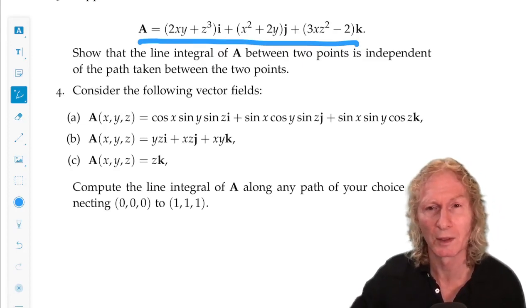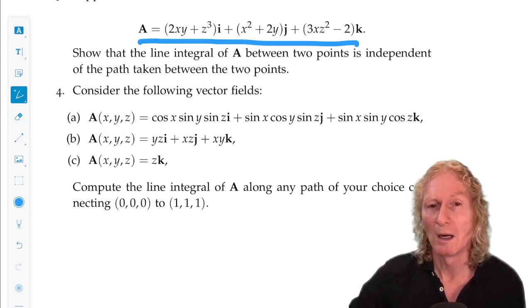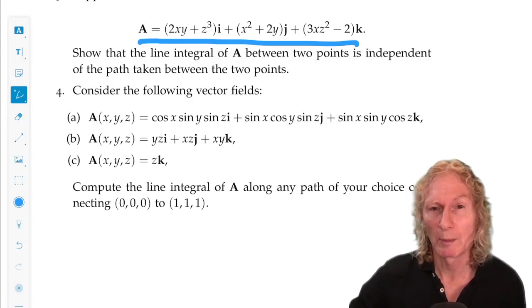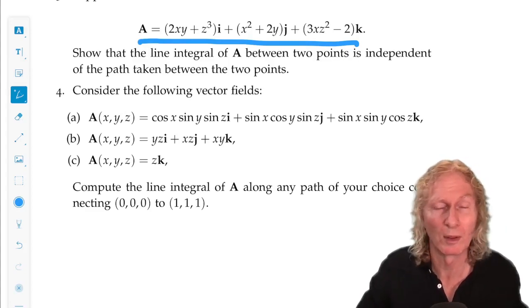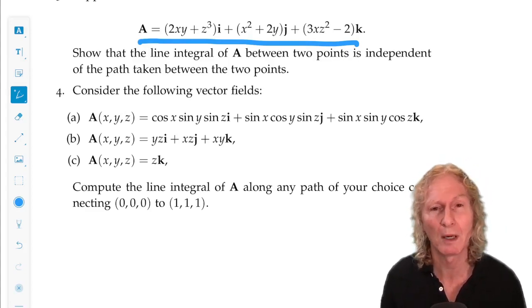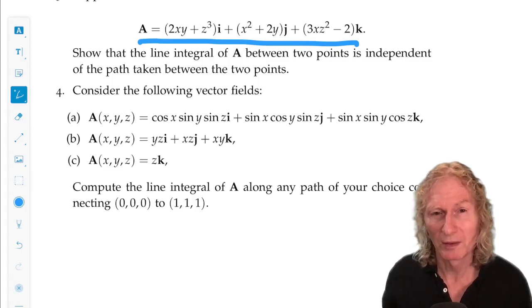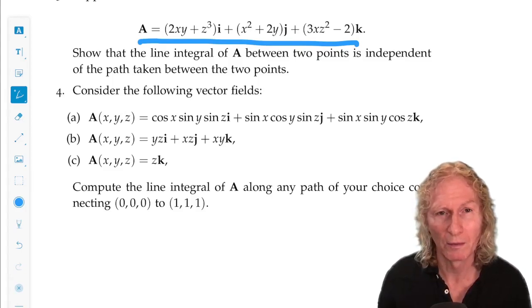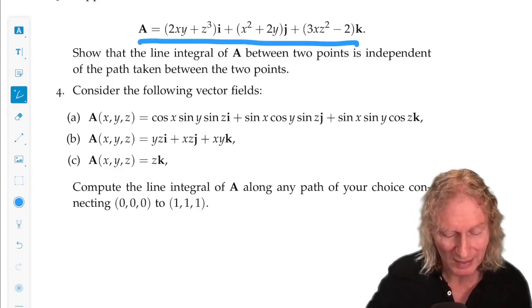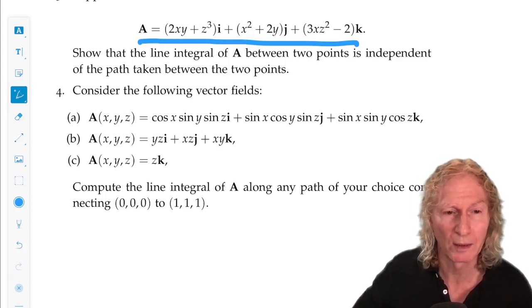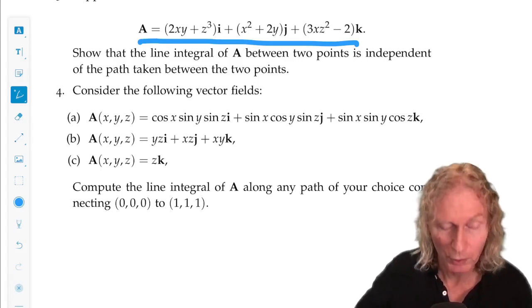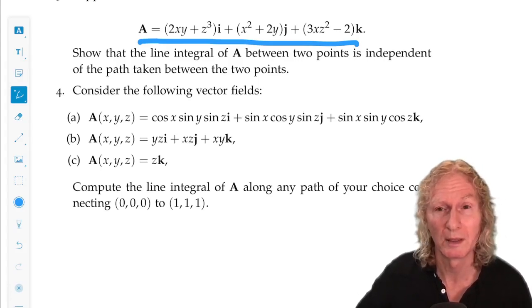But you could also find the scalar valued function whose gradient is the vector field. And that's a much easier calculation than parametrizing a path and so on. You could do that. I said just do it for any path you want. You could take the easiest one. But there is a scalar valued function whose gradient is the vector field. And it's pretty easy to find in these cases, I believe. And so then you just evaluate the scalar valued function at the two endpoints and subtract them. And it's easy.